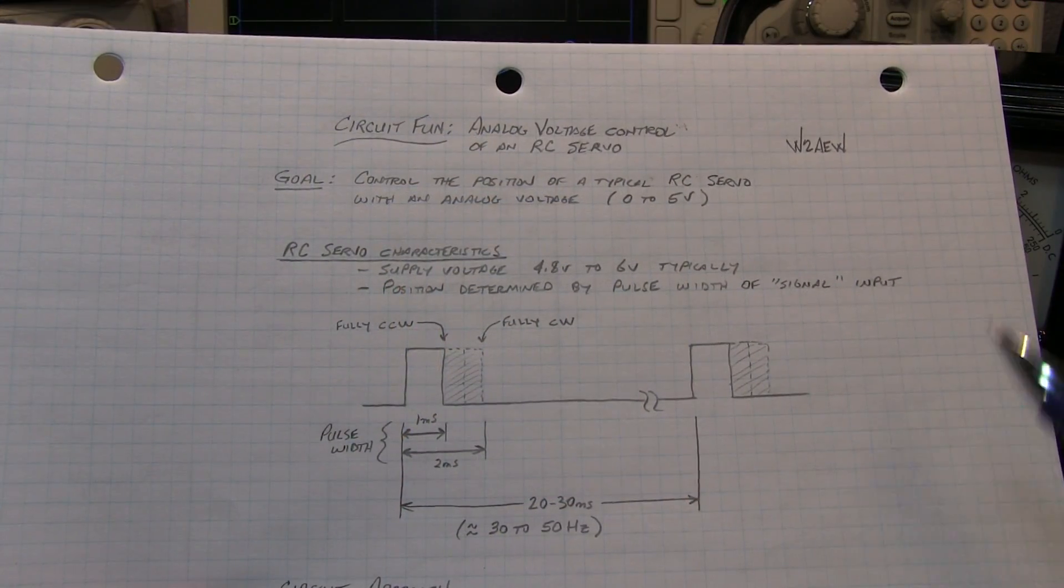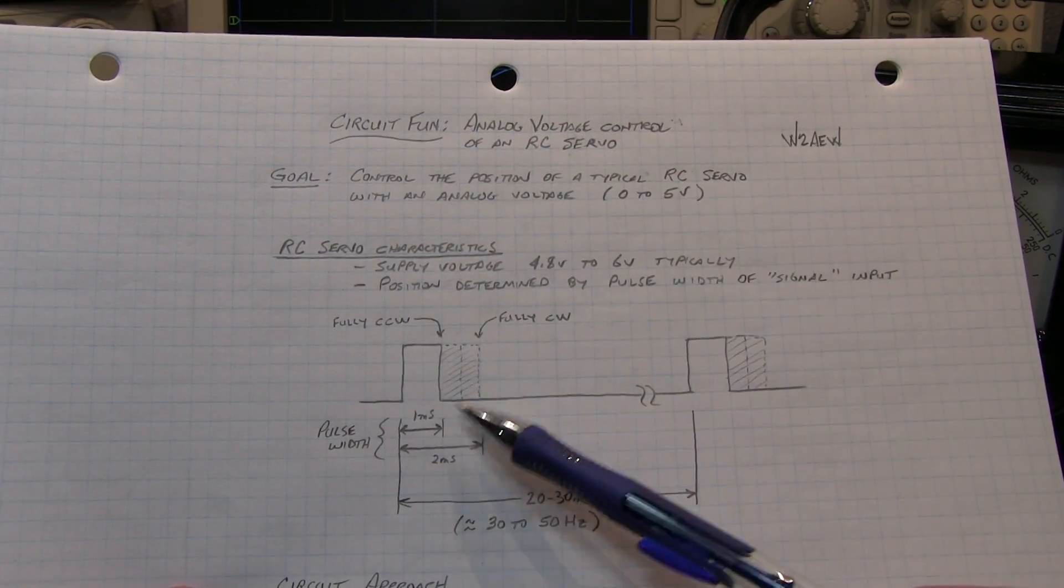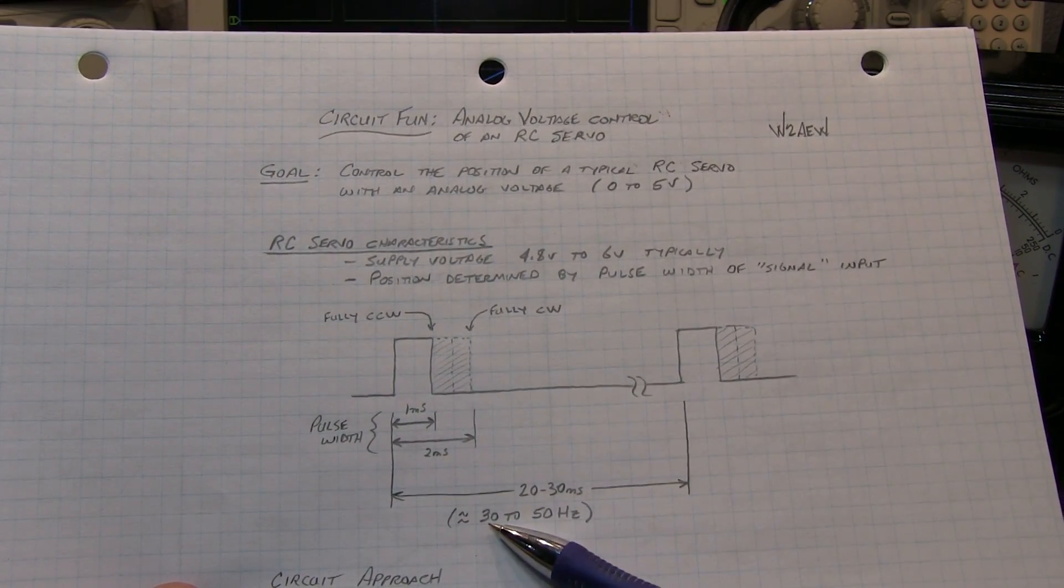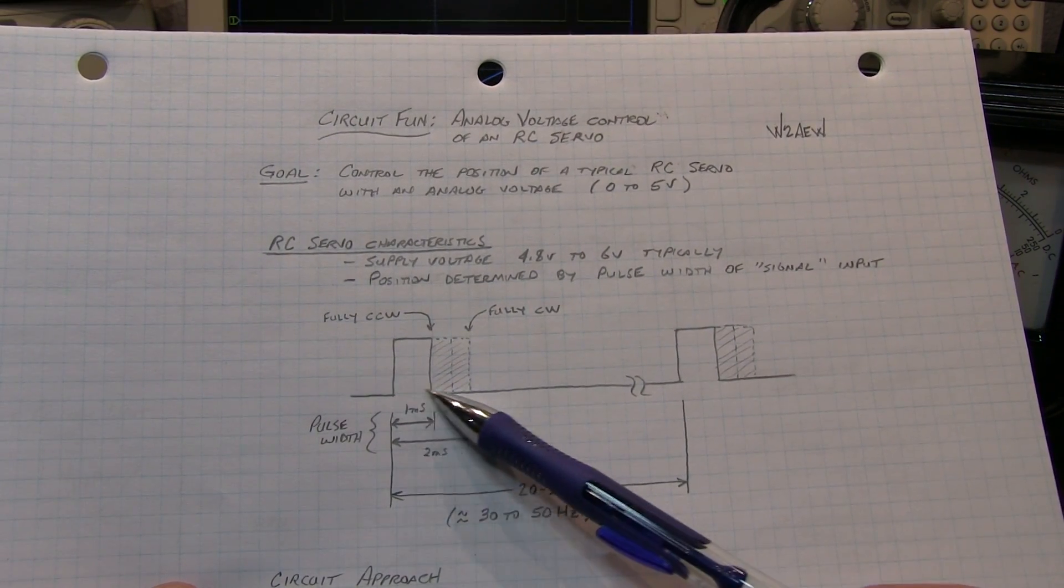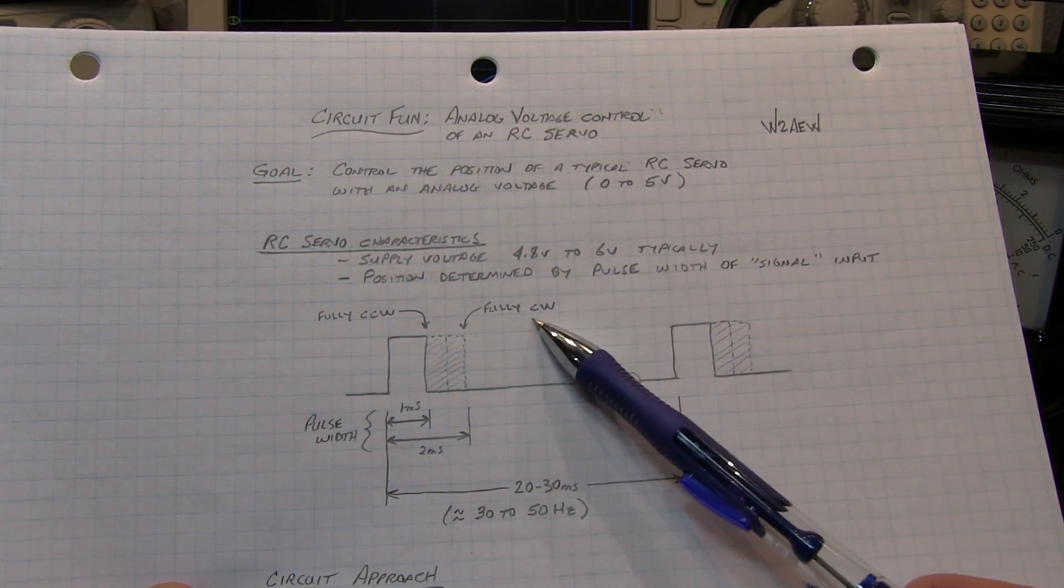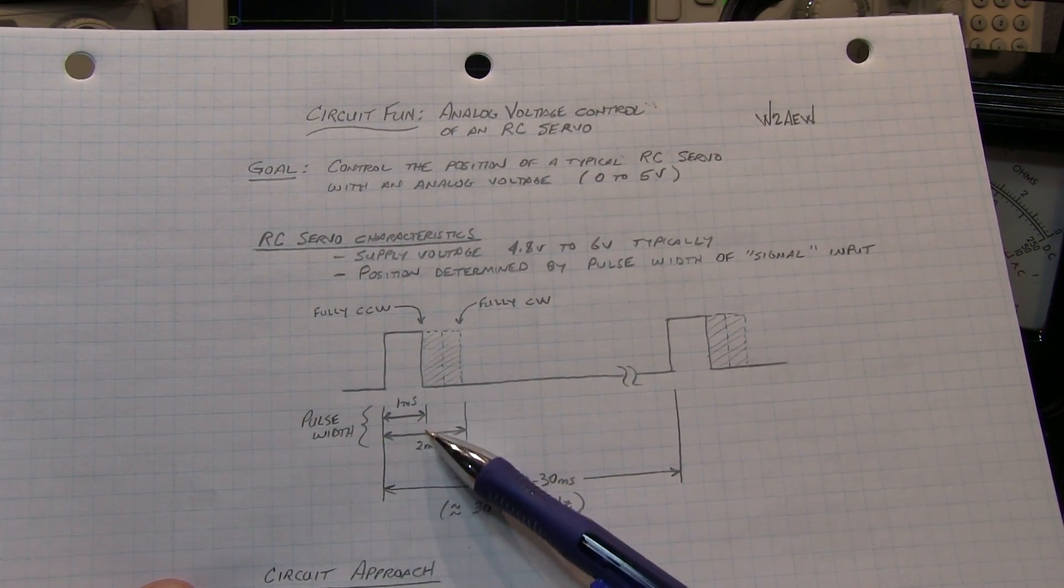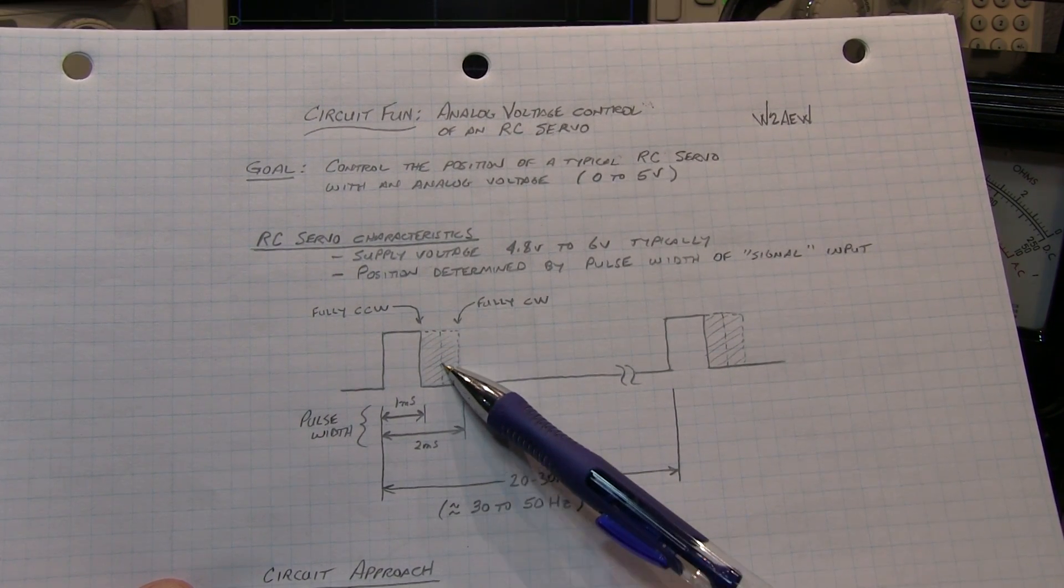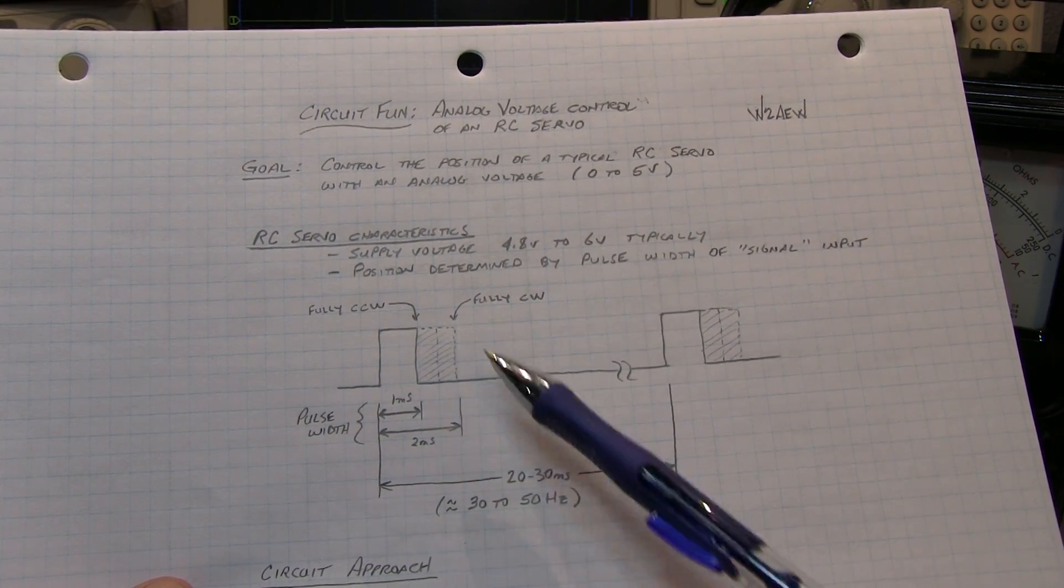These remote control servos that are used in RC models all basically work the same way. You get a signal from a receiver that is pulse width modulated. The pulses are repeated between every 30 to 50 times a second, or 30 to 50 Hertz. And the width of that pulse determines essentially whether the servo is fully counterclockwise, fully clockwise, or somewhere in between. The range of this pulse width is just from one millisecond to two milliseconds. So the servo would be in its middle position at about one and a half millisecond pulse width, fully counterclockwise at one millisecond, and fully clockwise at two milliseconds.